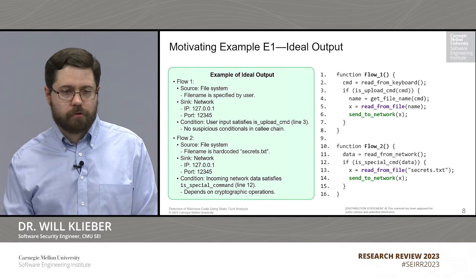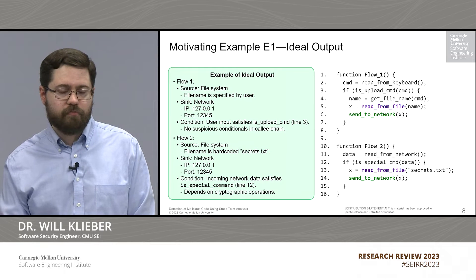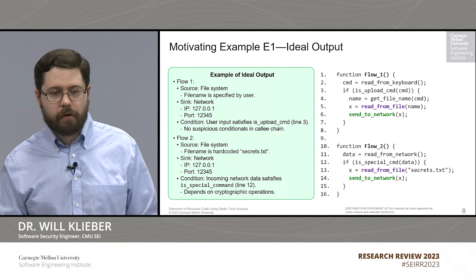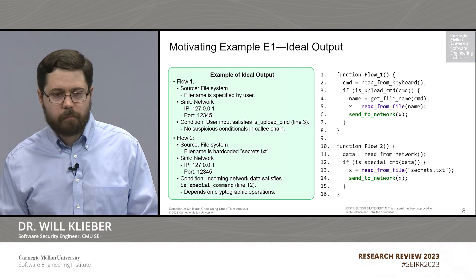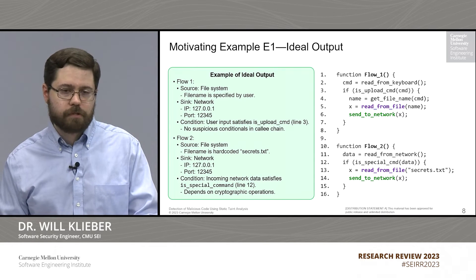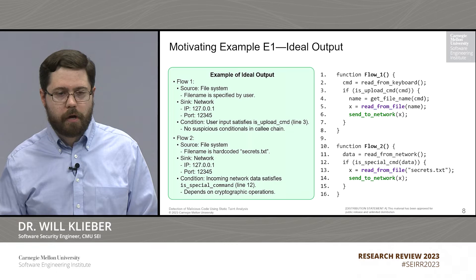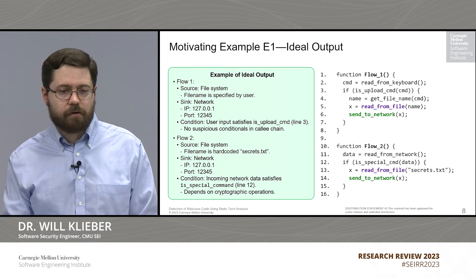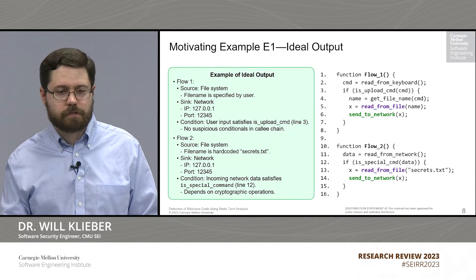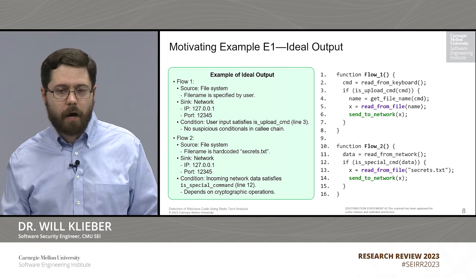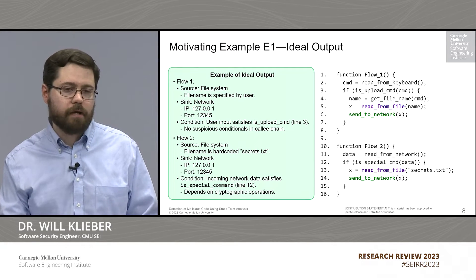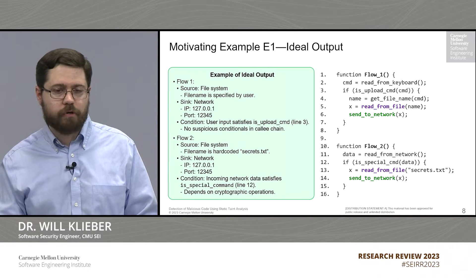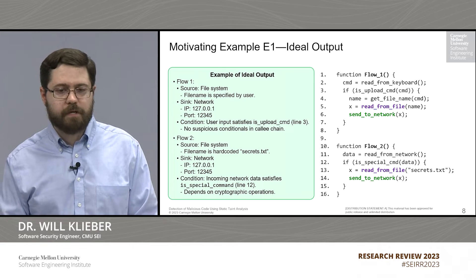For flow two, we again report that the source is the file system, we report the hardcoded file name, and we report information about the sink. For the condition, we say that it happens if data satisfies a certain function, and we also identify that that data came from the network. In this case, perhaps that function uses some cryptographic hash functions to check whether the data really is the special command intended to trigger on. We would identify that the condition involves cryptographic operations or other features that might be indicative of malware.